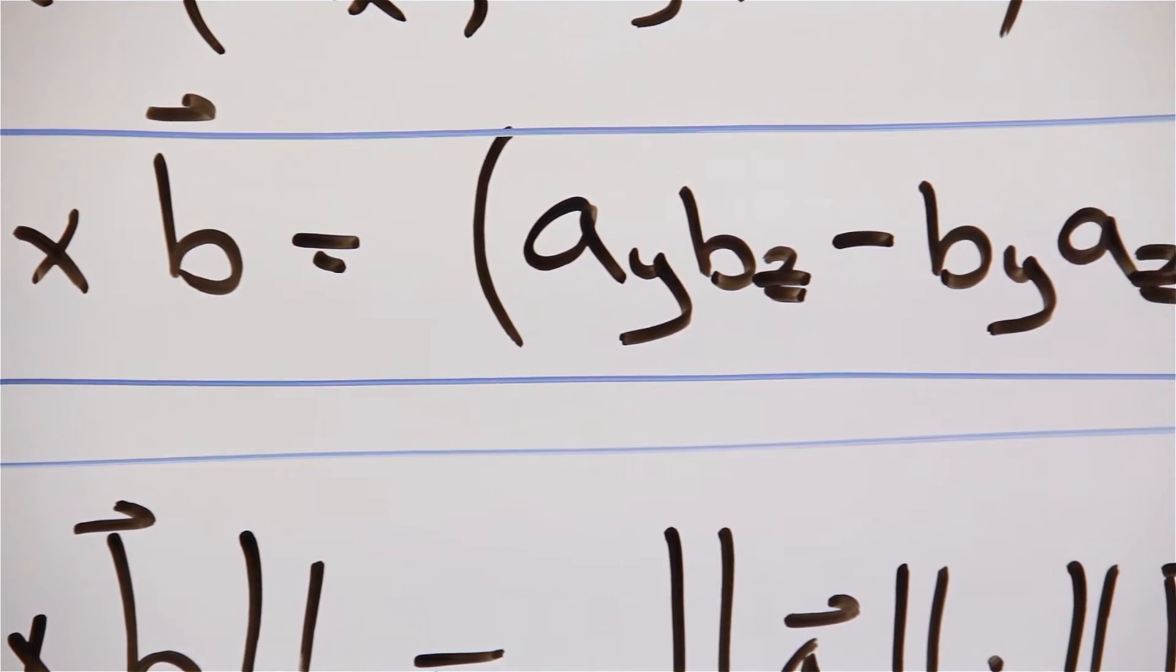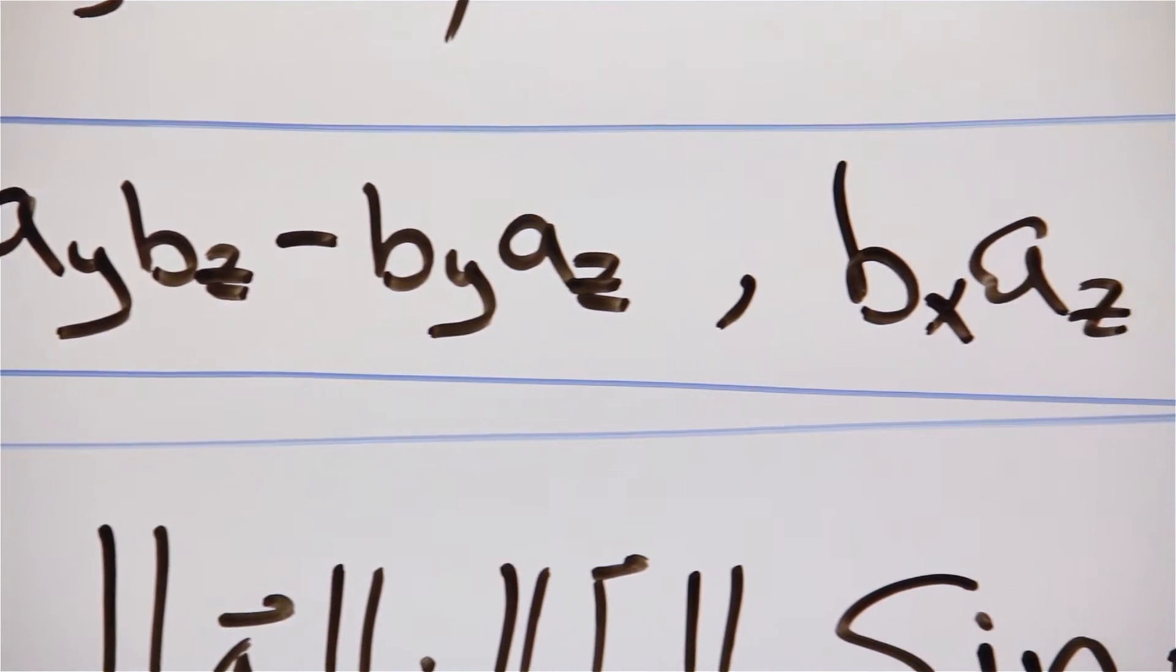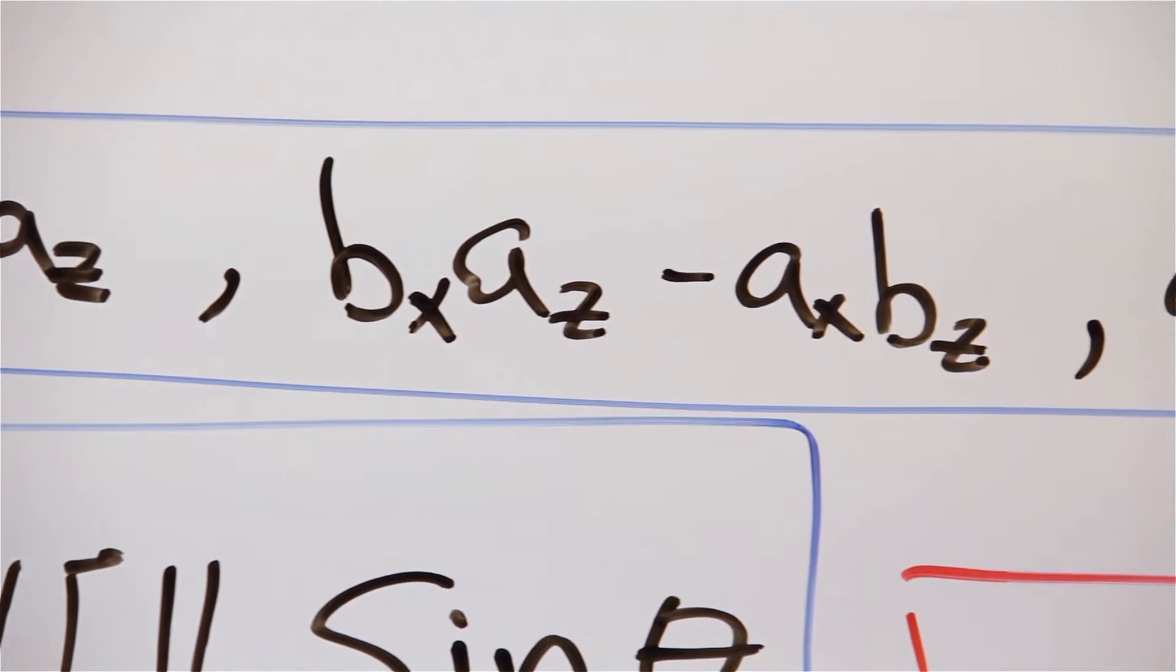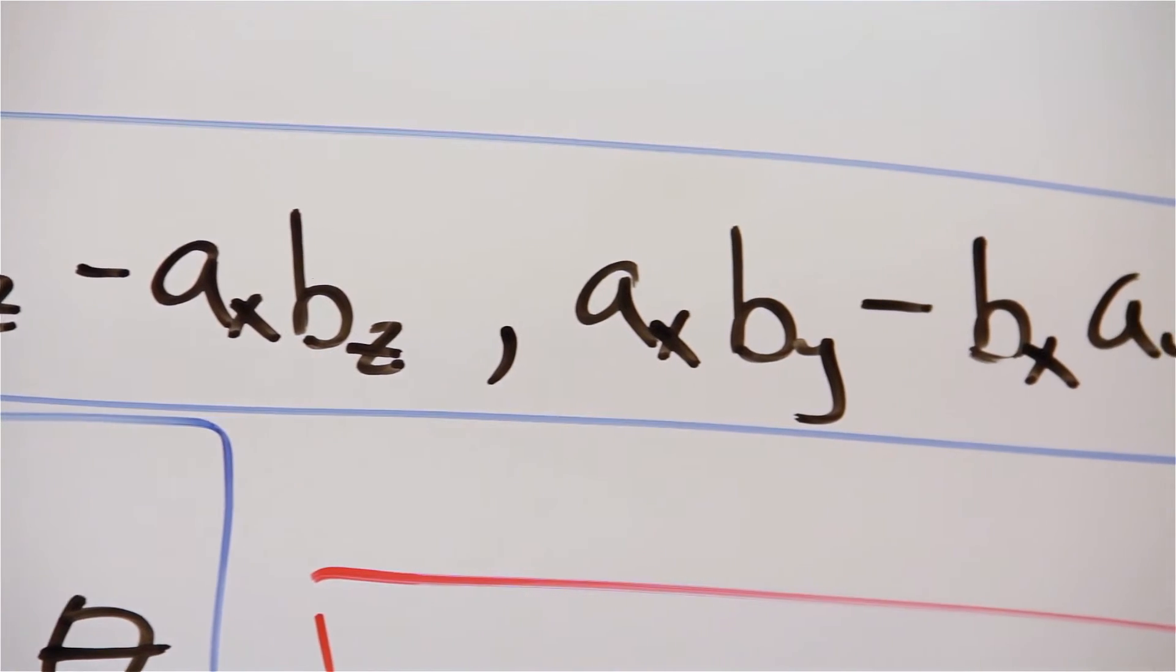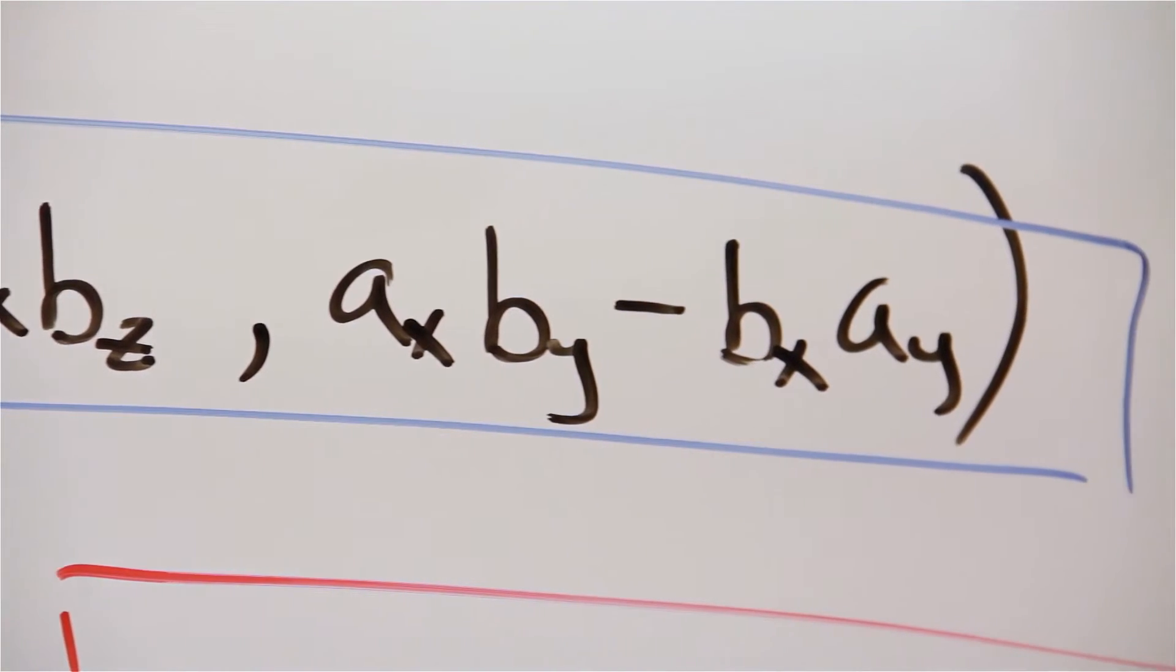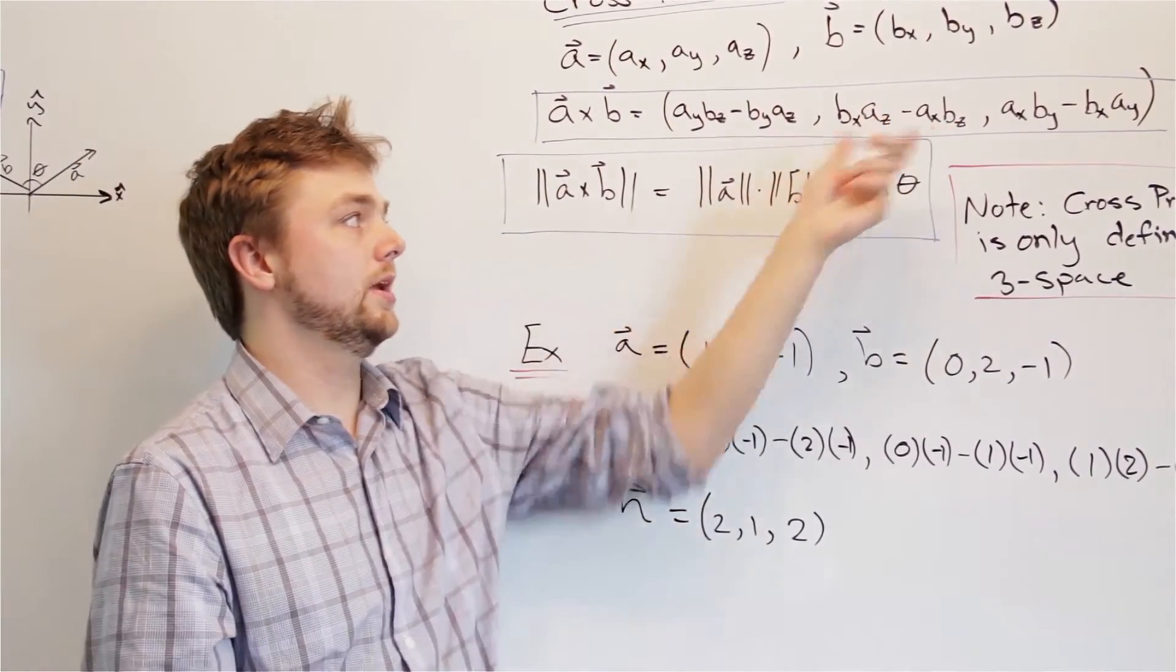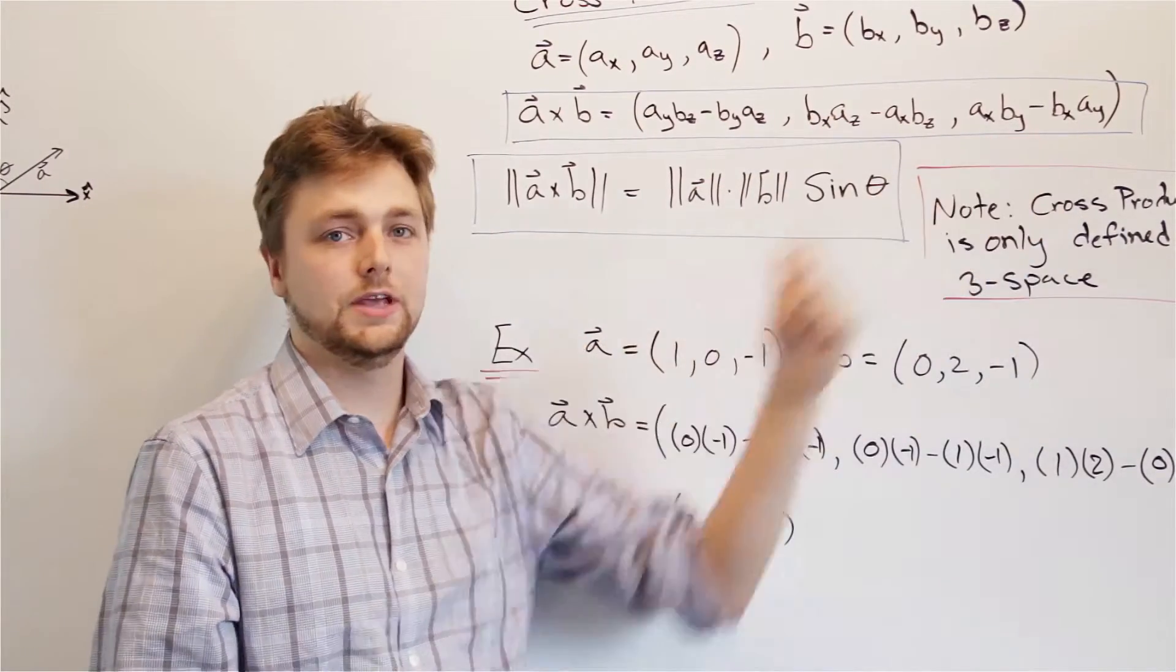The formula that we're going to use for the cross product will be this one. This might look a little intimidating at first, but it's actually quite straightforward once you get the hang of it. As a sanity check, we'll take a look at each of the individual terms. We'll notice that the x term for the cross product doesn't involve any components from the x values of a and b, in the same way that the y component doesn't involve either's y component, and the same with z.